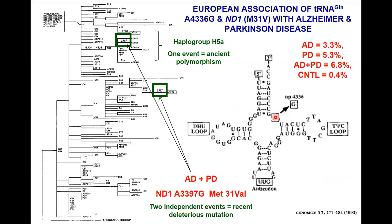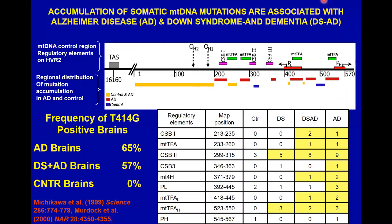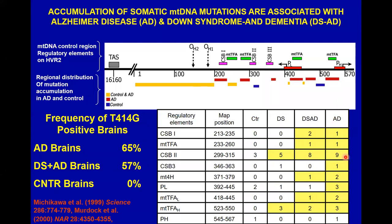A mutation in the tRNA glutamine gene increases risk for Alzheimer's disease. In Alzheimer's brains, looking at somatic mtDNA mutations in brain cells, a particular deleterious mutation is present in 65% of Alzheimer's brains. In Down syndrome with dementia, about 60% have the mutation, but age-matched controls never have this regulatory mutation. Controls have very few of these brain mutations; Down syndrome has slightly more; Down syndrome with dementia higher; and Alzheimer's even more. Alzheimer's — a late-onset disease — is triggered by a lifelong accumulation of secondary mtDNA damage that ultimately causes energetic failure.